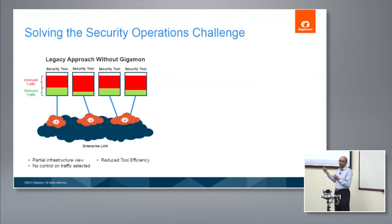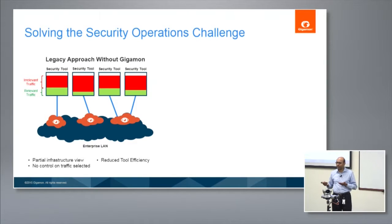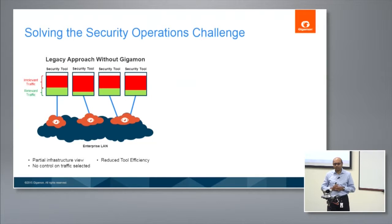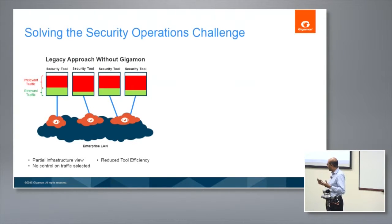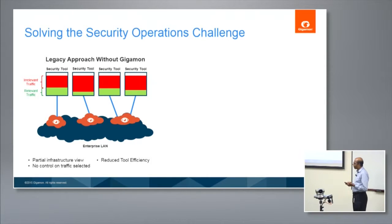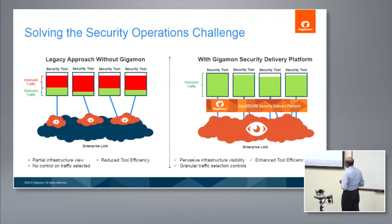Number two, the amount of traffic fed to the tool may not be relevant. There could be a lot of irrelevant traffic, like video, which may not be the cause of the attack. The ability to filter out and extract the relevant traffic is one of the key things, and you don't have any kind of tool efficiency because of this.